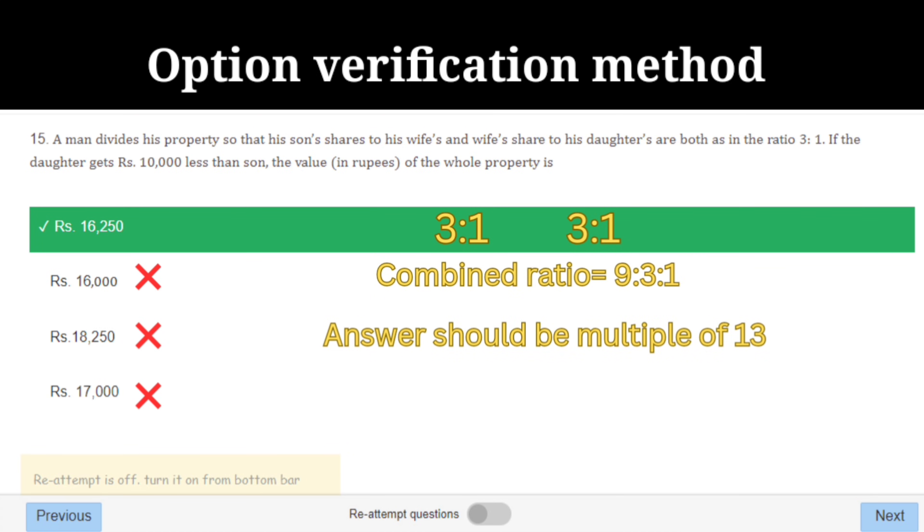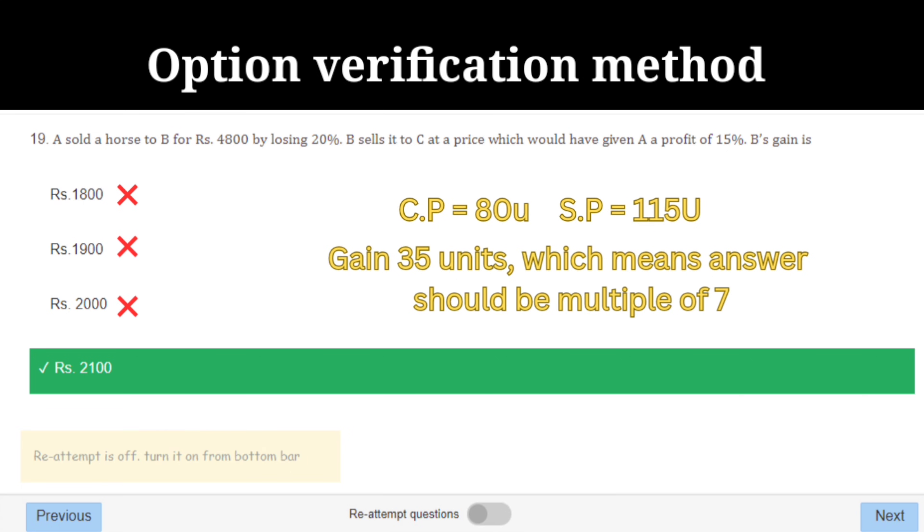Moving on to the next: the value of whole property. First we have to find the combined ratio. The combined ratio is 9 is to 3 is to 1, which means total of 13 units. So the final answer should be a multiple of 13. Just verify the options, you will get it. Moving on to the next.